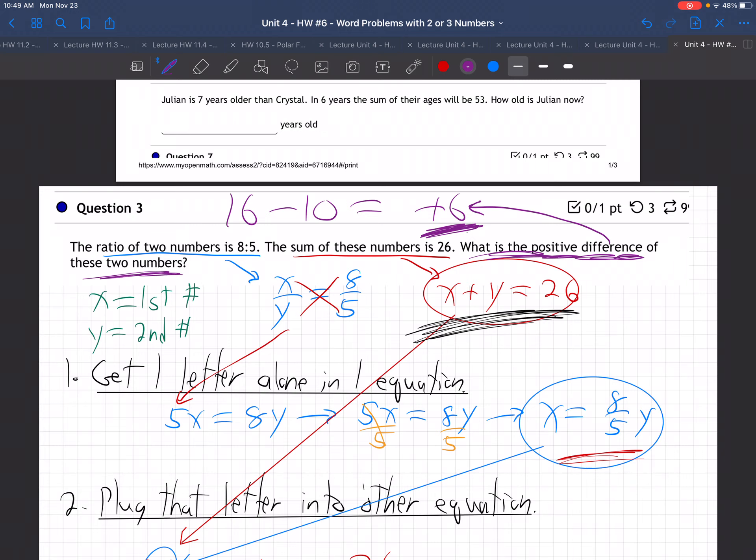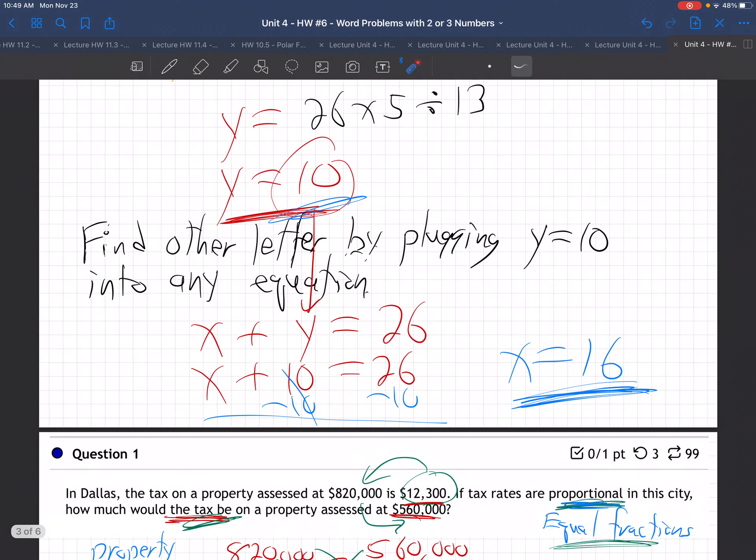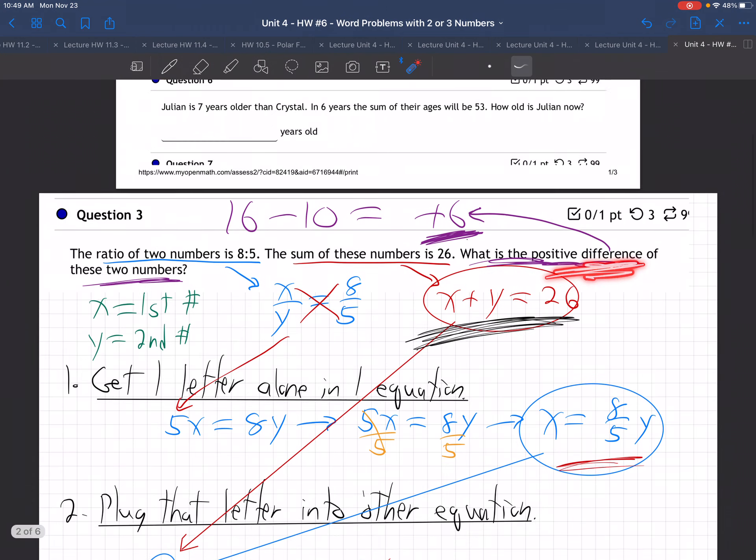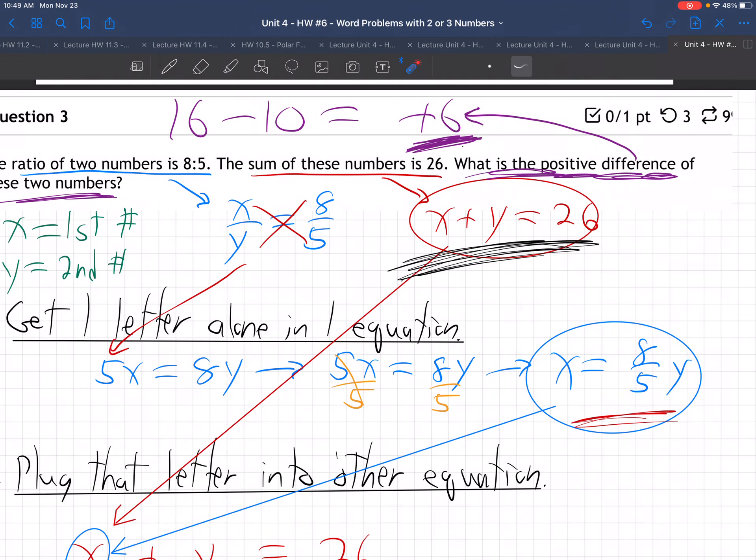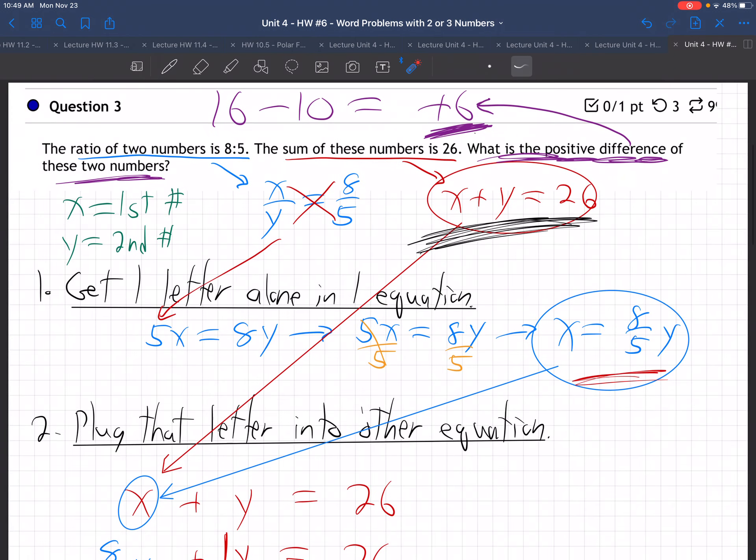Did you notice that kind of tricky question? They didn't want the two numbers. My two numbers were 16 and 10. There's the two numbers, x and y, 16 and 10. What they want is the difference, the positive difference between those numbers. The difference between 16 and 10 is 6. That's the positive difference between those numbers. So that's the answer to the question, 6.